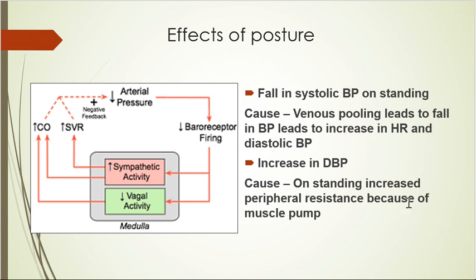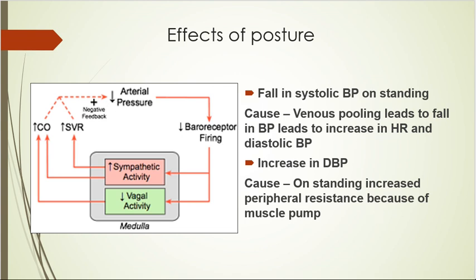Regarding the increase in diastolic value, there is an additional reason: on standing, anti-gravity muscles are activated, increasing the muscle pump effect, which increases peripheral resistance and venous return. Whenever there is a fall in blood pressure, baroreceptor firing decreases, leading to increased sympathetic activity, increased cardiac output, and increased peripheral resistance — which together restore BP.